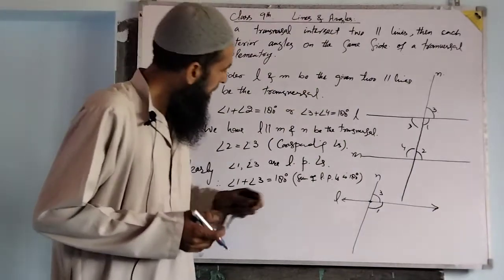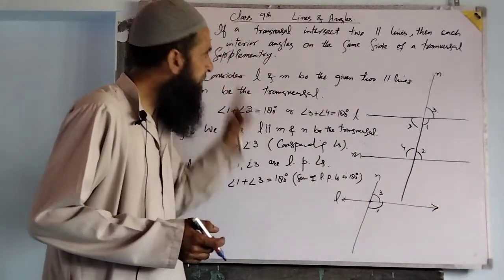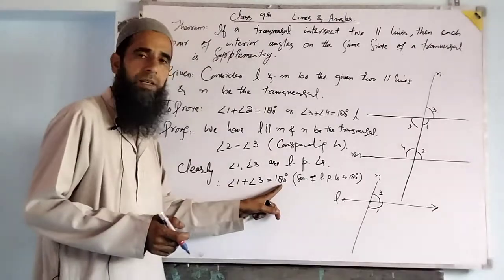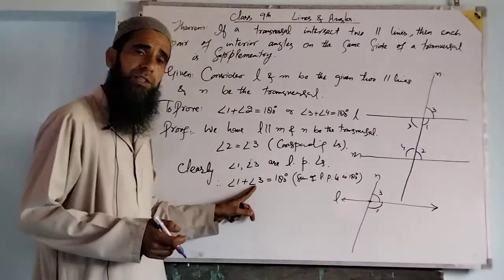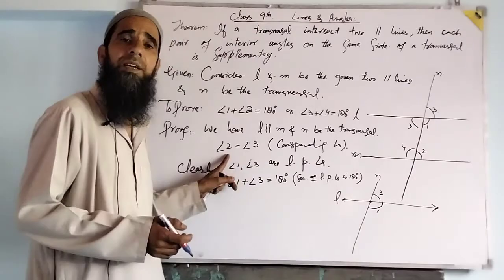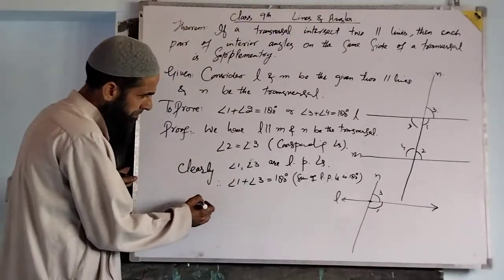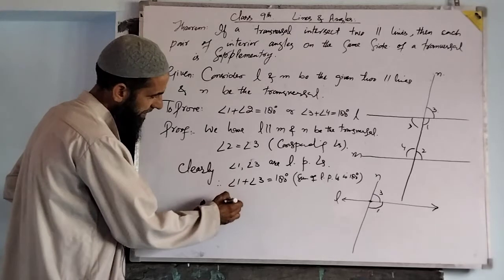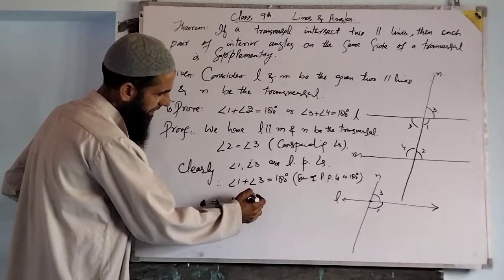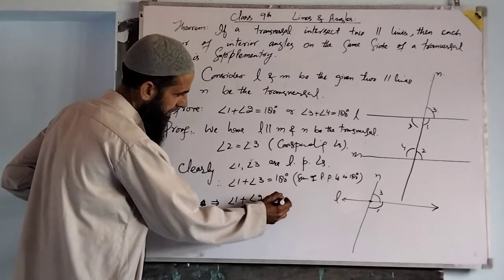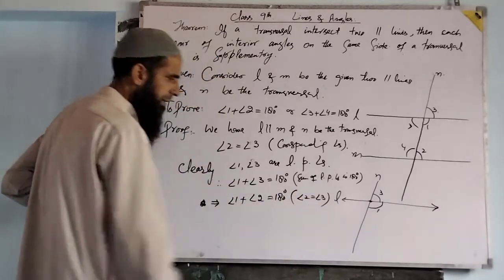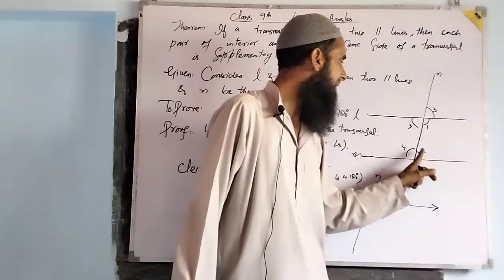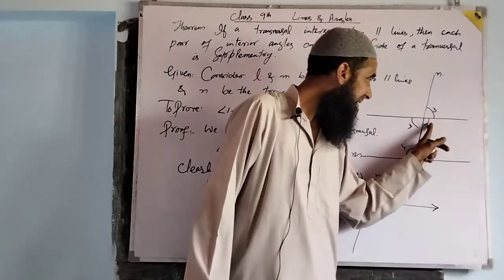We now combine these two results. We have angle two equal to angle three, and we have angle one plus angle three equal to 180. In this equation we replace angle three with angle two. Therefore, angle one plus angle three equals 180, and since angle two equals angle three, we get angle one plus angle two equals 180.